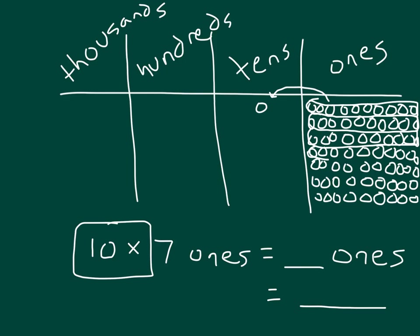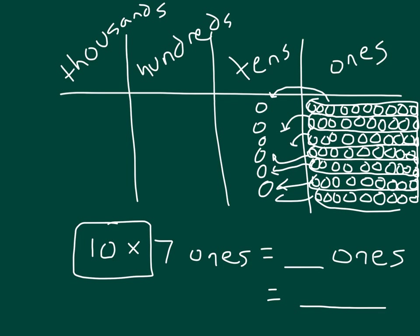10. So 10 ones equals 1 ten. And I'll do that for each of those. So that we'll end up with how many tens? 1, 2, 3, 4, 5, 6, and 7. 7 tens, which is also worth 70.